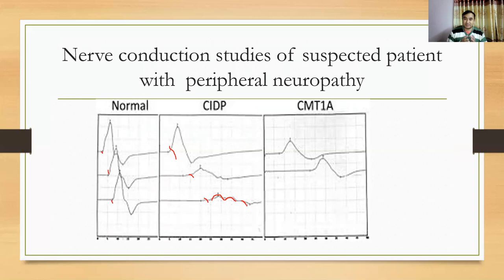In contrast, patients with CMT have symmetrical demyelination, so there is no feature of conduction block or temporal dispersion. Therefore, if a nerve conduction report shows conduction block and temporal dispersion, this favors the diagnosis of CIDP rather than CMT1A.